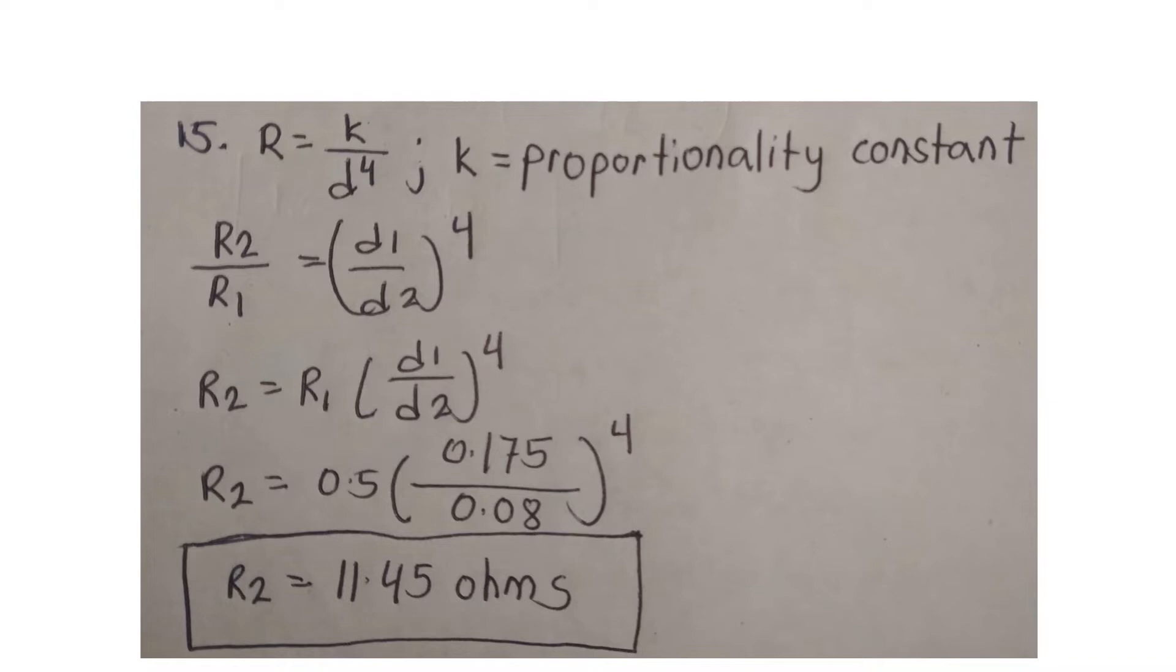And then we will multiply the first resistance to both sides to get the second resistance, which is R2 equals R1 multiplied by D1 over D2 raised to 4.